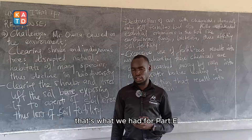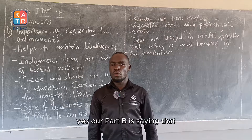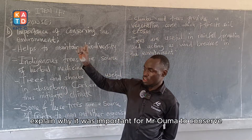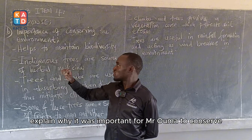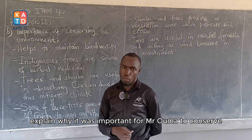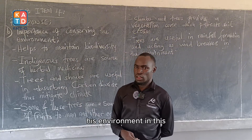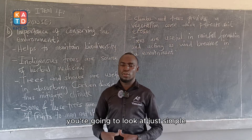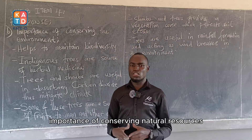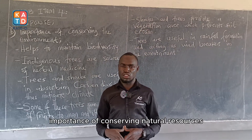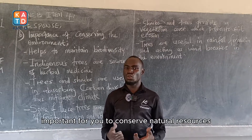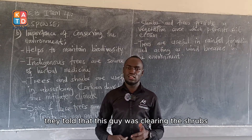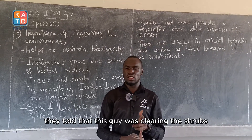That is what we had for Part A. Part B is saying: explain why it was important for Mr. Ulmer to conserve his environment. Here you are going to look at the simple importance of conserving natural resources — why is it important for you to conserve natural resources? Go back: this person was clearing shrubs and indigenous trees for maize plantation, and also clearing ant hills to prevent termites from attacking his crops.